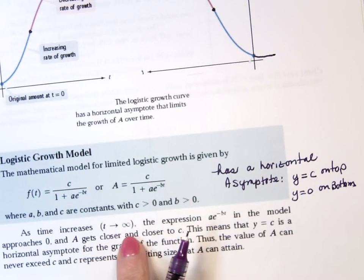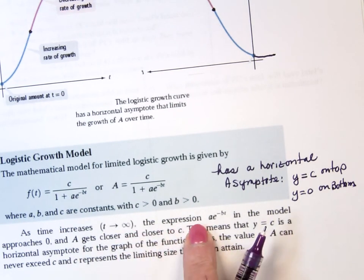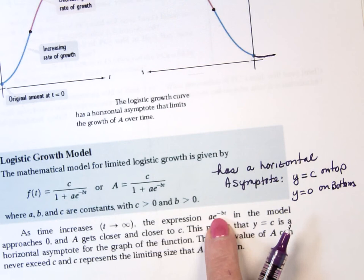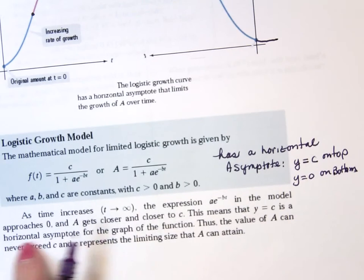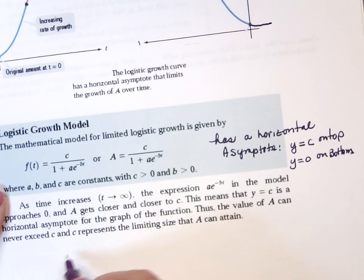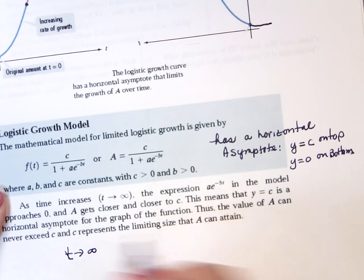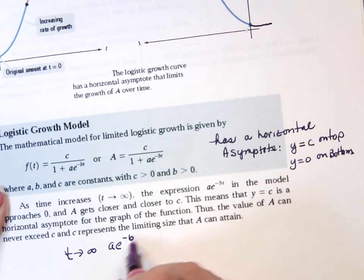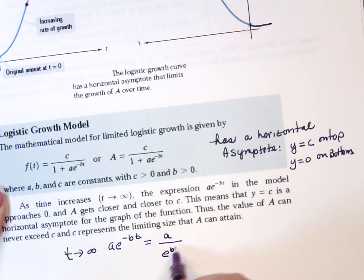As time increases, T goes to infinity. And A, E to the minus B over T. And the model approaches 0. And you're going to say, well, why is that the case? Because as T goes to infinity, we have A, E to the negative B, T. Which is the same as A over E to the B, T.